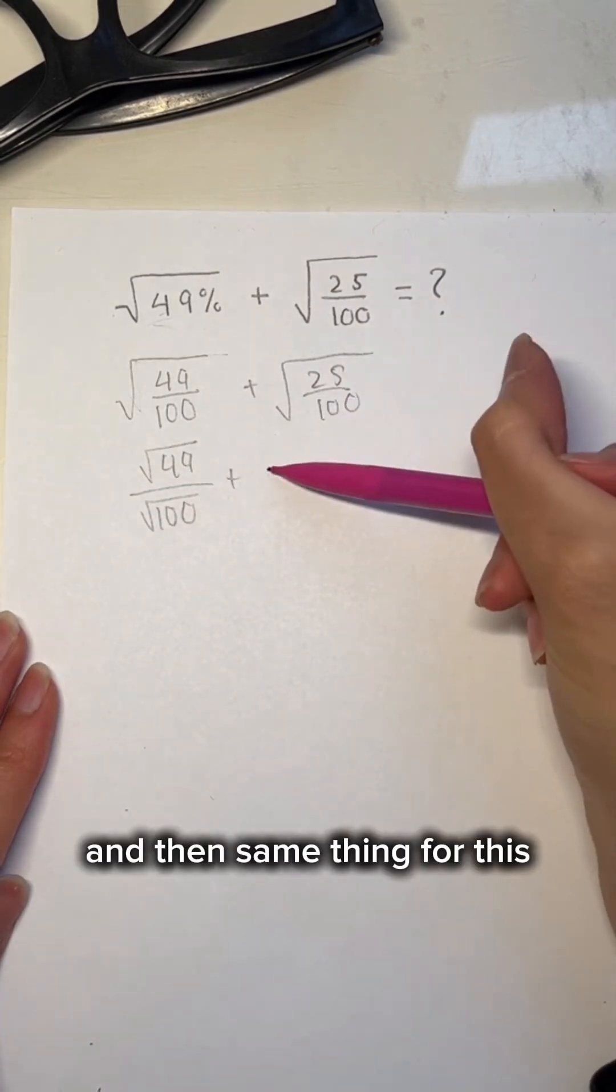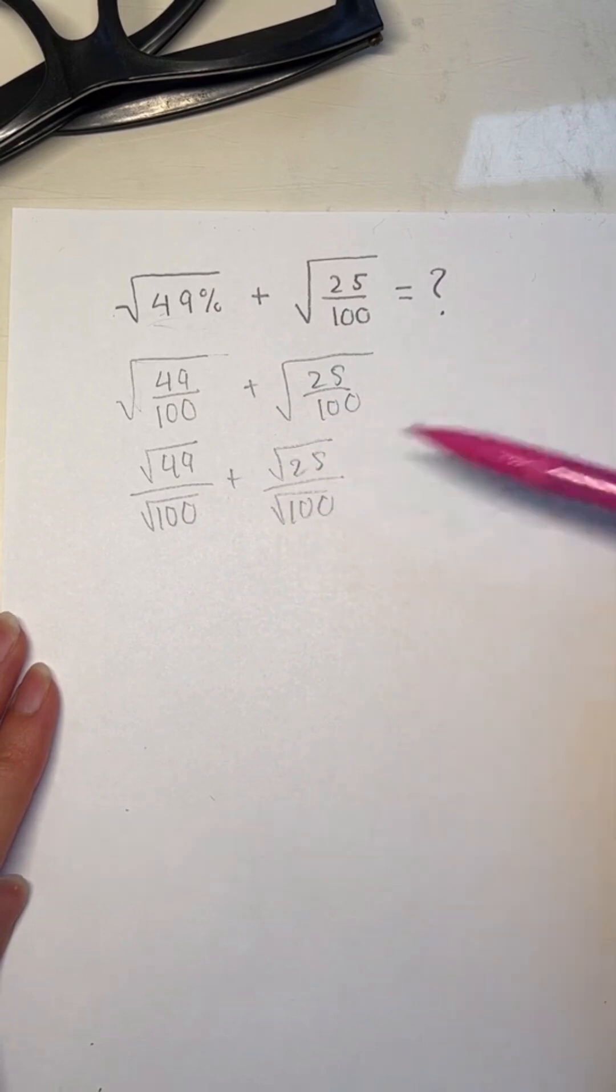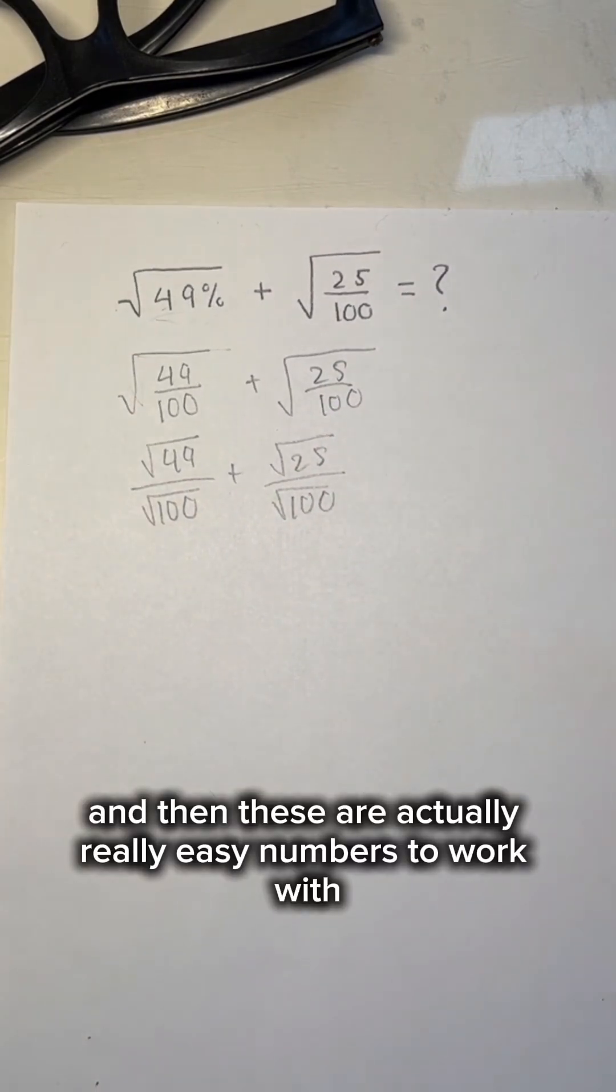And then same thing for this, it's going to be the square root of 25 over the square root of 100. And then these are actually really easy numbers to work with.